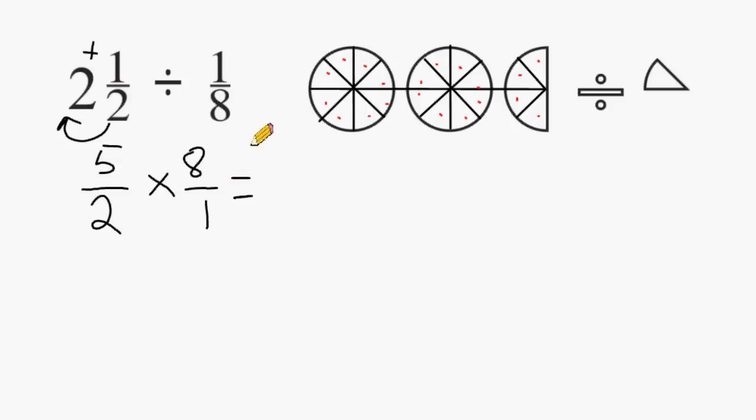The next thing that we can do is multiply the numerators together, which would give us a product of 40. And the denominators will give us a product of 2.